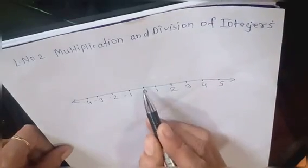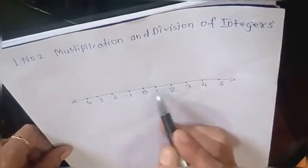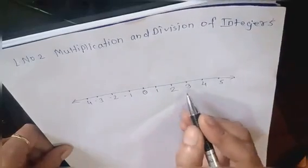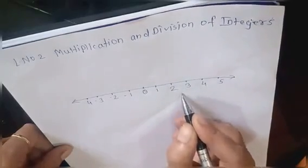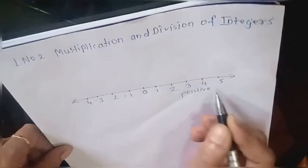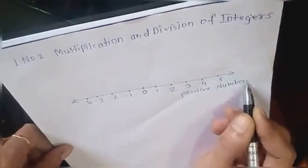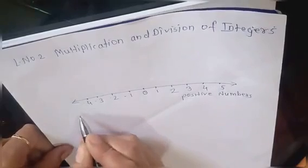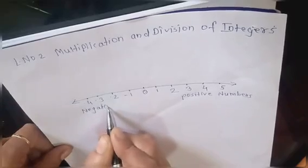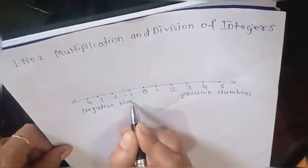Here is 0, which means origin — that is the origin of the number line. On the right side there are positive numbers, and on the left side there are negative numbers.